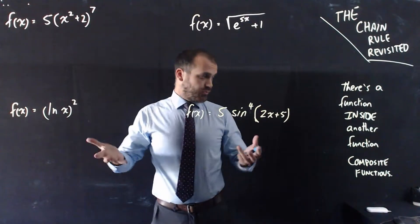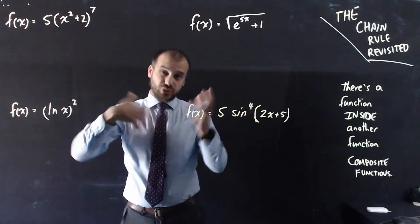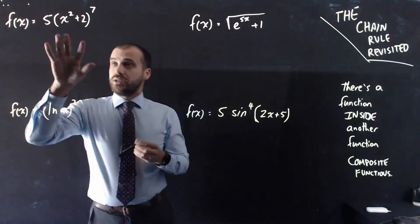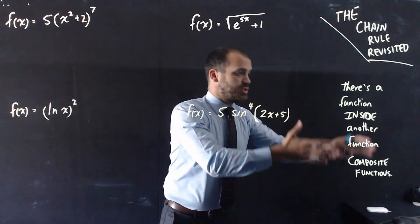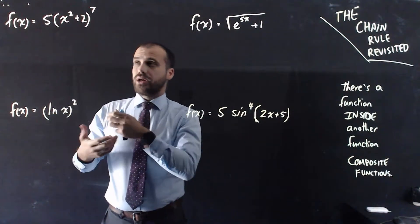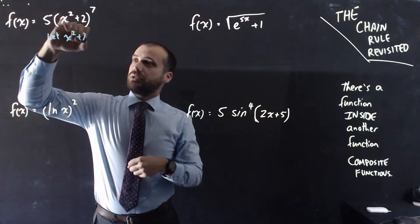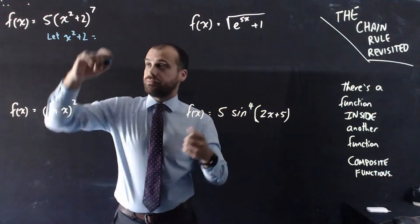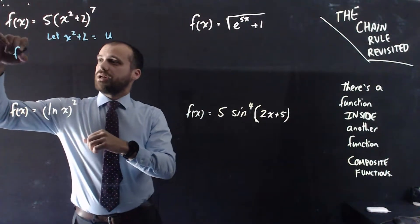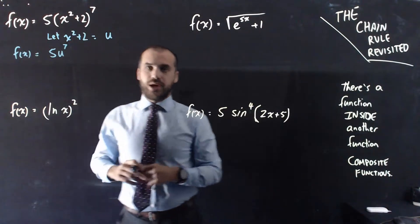So here we've got four examples of what we're going to do the chain rule with. We've done a chain rule question like this before — we've sort of got a shortcut for it — but I'm going to do it the long way here so we can see what's happening. When we say it's a function inside another function, we can say that I could let x squared plus 2 equal the letter u. If I do that, the function becomes f(x) equals 5u to the power of 7.